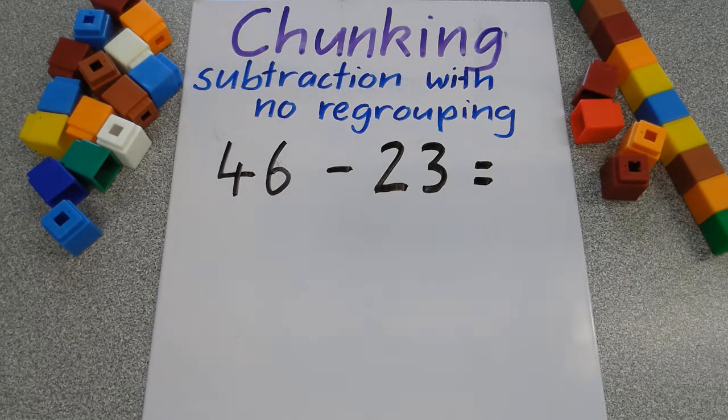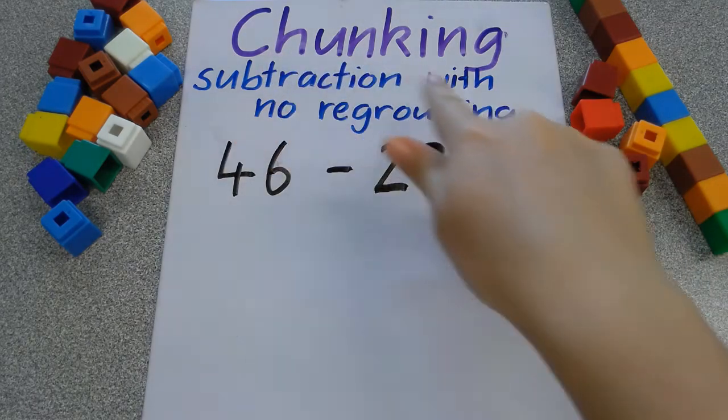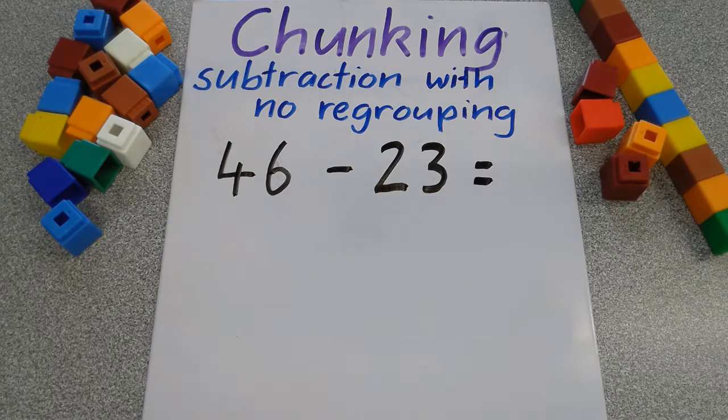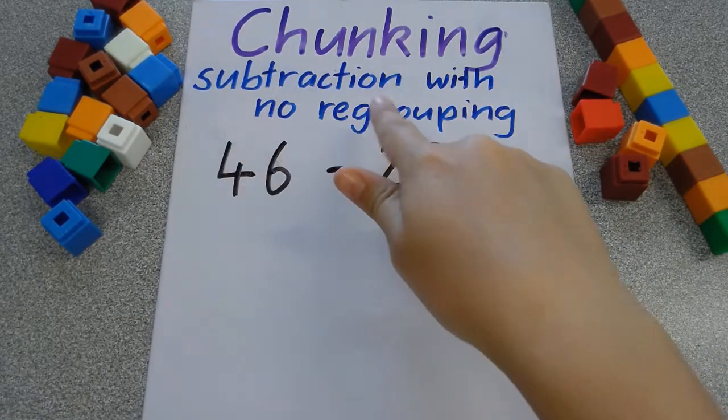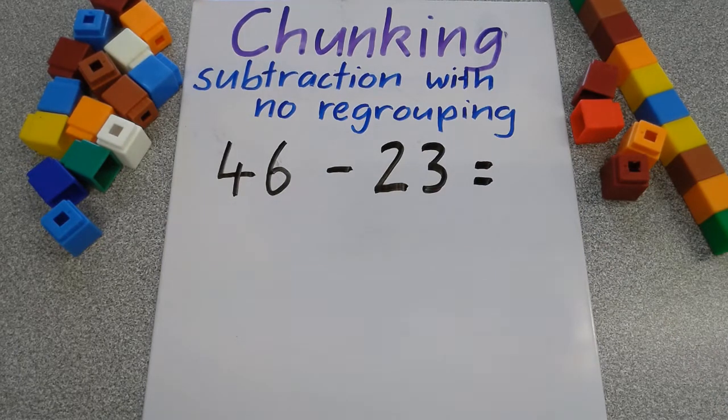Hi everyone, today we are doing a math strategy lesson and the strategy is called chunking. I've already looked at chunking for addition, but today we are doing chunking using subtraction, which means take away, and we are using nice friendly numbers which means we don't have to regroup. So the sum we're looking at today is 46 take away 23.